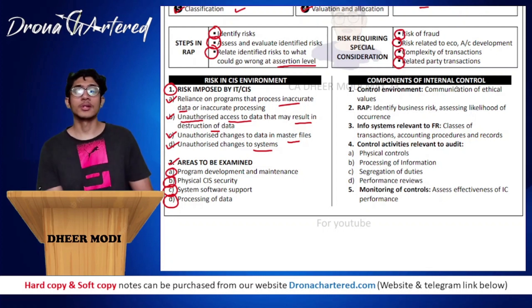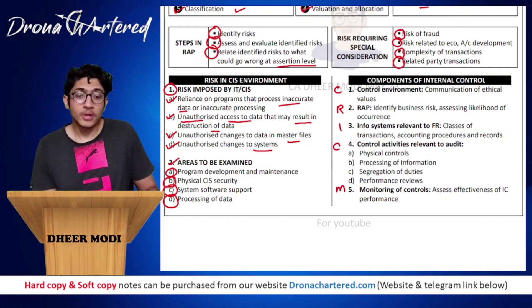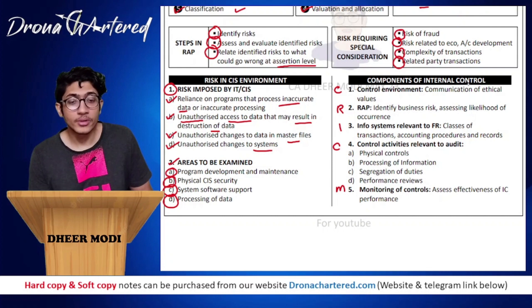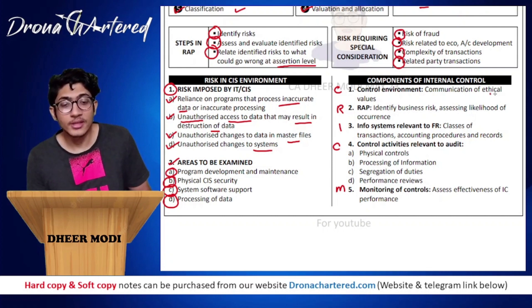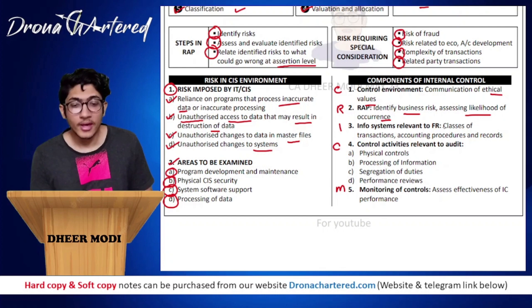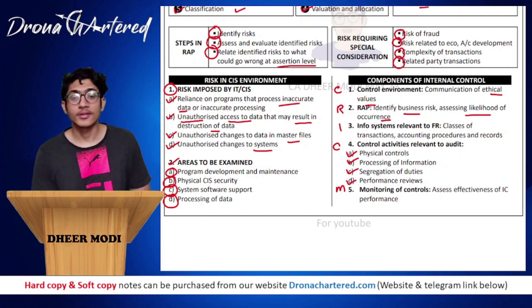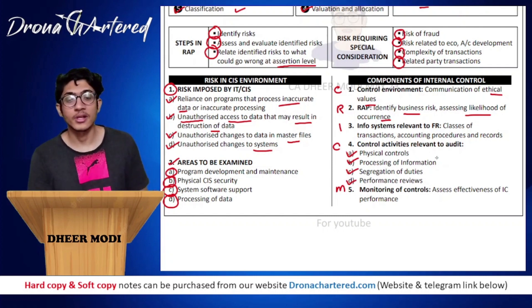Next are the components of internal control, remembered by the acronym CRICM. First is the control environment - this covers communication of ethical values. Second is RAP, your risk assessment procedure, which helps identify business risks and assess likelihood of occurrence. Third is your information system relevant to financial reporting - that is your classes of transactions, accounting procedures and records. Fourth is control activities relevant to audit - physical control, processing of information, and segregation of duties.